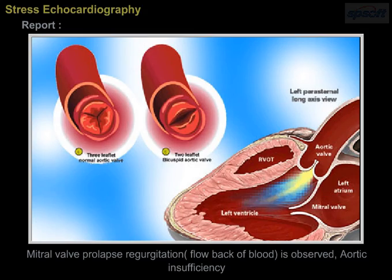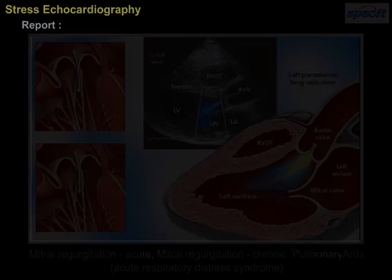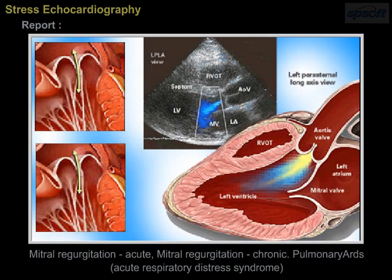Aortic insufficiency, acute mitral regurgitation, and chronic mitral regurgitation are observed. Pulmonary conditions such as acute respiratory distress syndrome (ADS) are also noted.